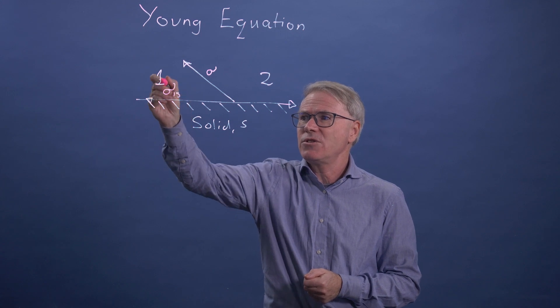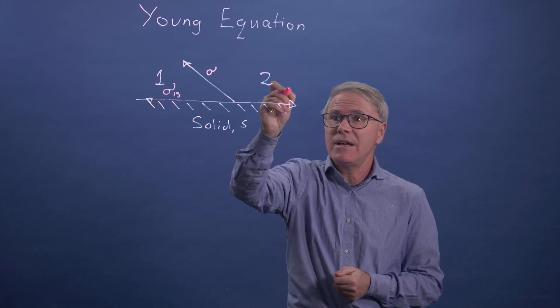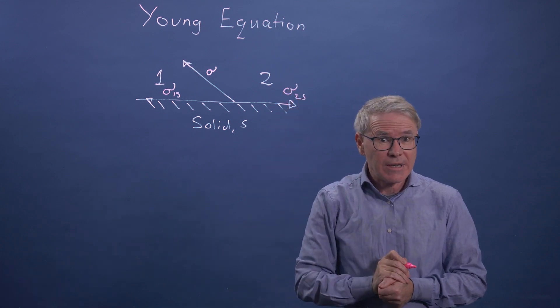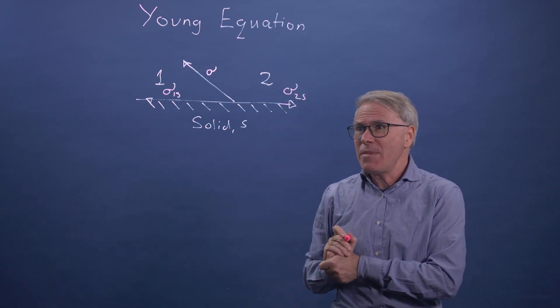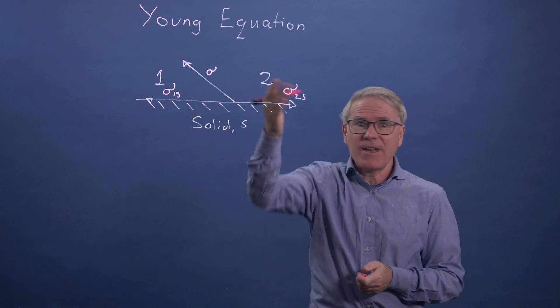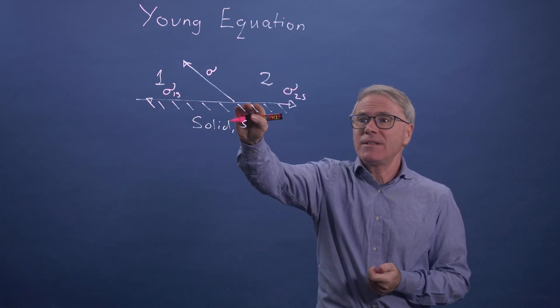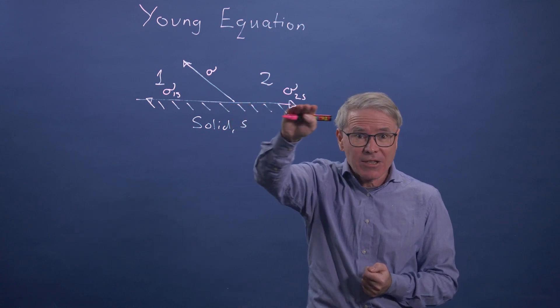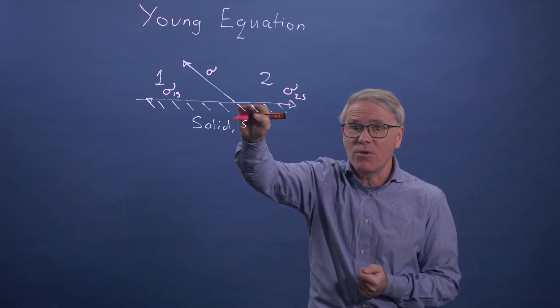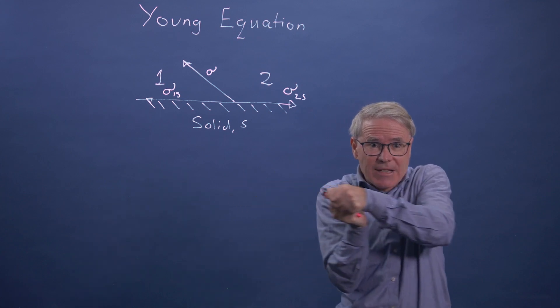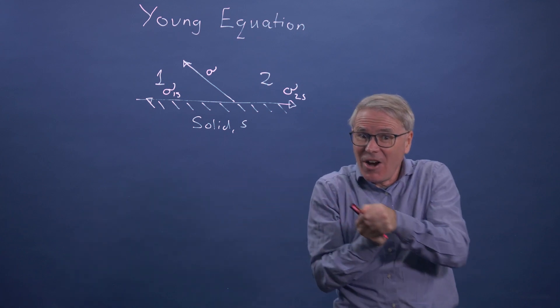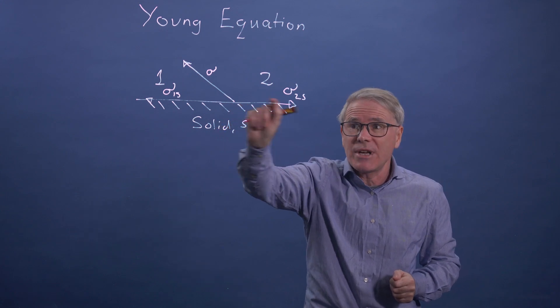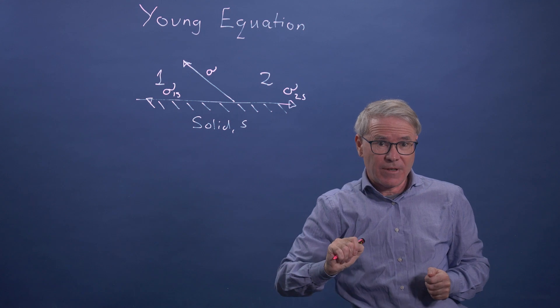So there's an interfacial tension between phase one and the solid here, and an interfacial tension between phase two and the solid here. For instance, if phase two is air and this is a cut surface, an ionic surface where all the bonds have been broken, it wants to cover that surface because it's a high energy surface. You can imagine this literally as something that's pulling the contact to coat that surface.